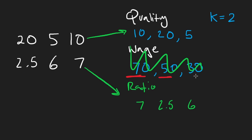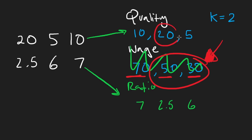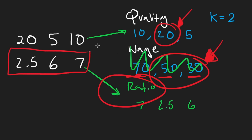But we know that's not enough, because the quality decides how much we actually pay them. So then we put that information into the ratio. And so now we've ordered based on that — we know both quality and wage matter, and so we've ordered them based on that.